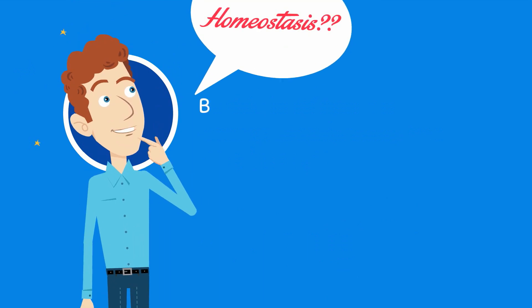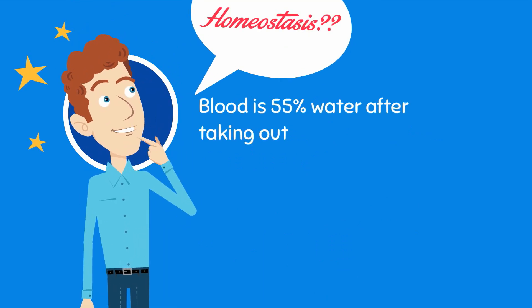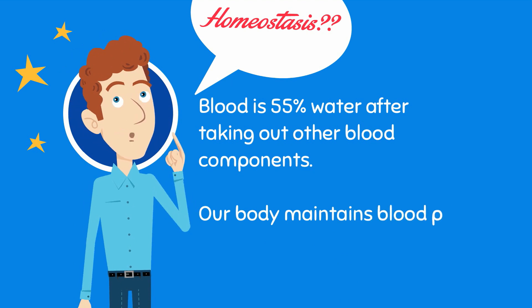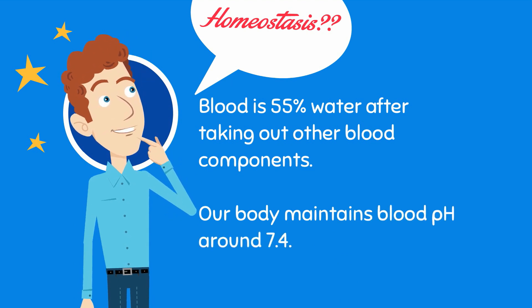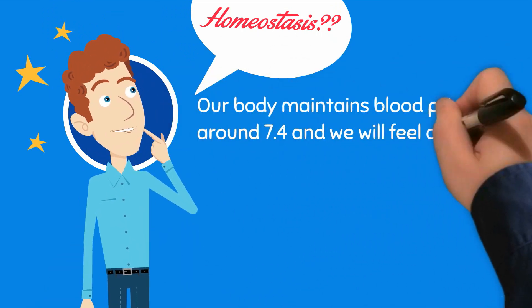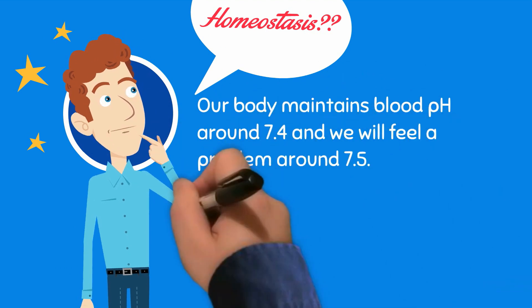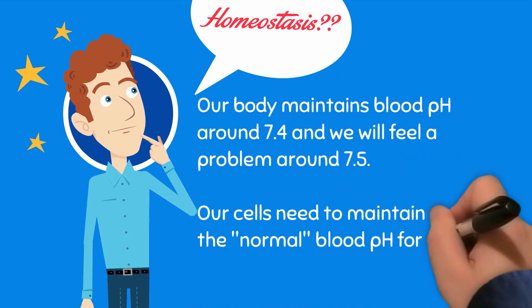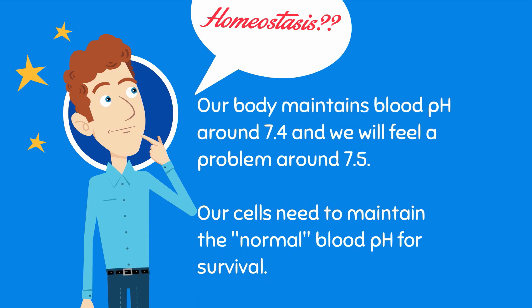Given the fact that blood plasma is 92% water and other blood components, it ends up roughly consisting of 55% water after we calculate things like the proteins, the cells, glucose, etc. Given this fact and that our blood pH is roughly 7.4, it is interesting that we start having issues in our body at 7.5. This is very similar to the last video's example of acidification of the oceans, in which a very small change in pH will have a large impact on living organisms.